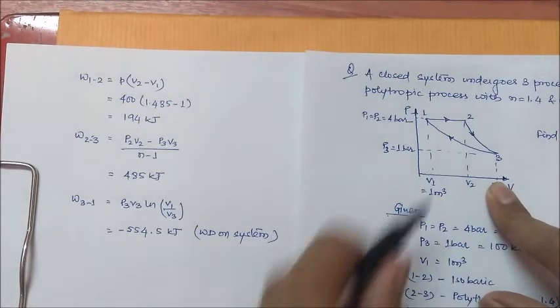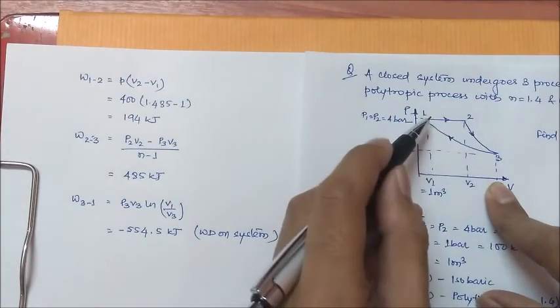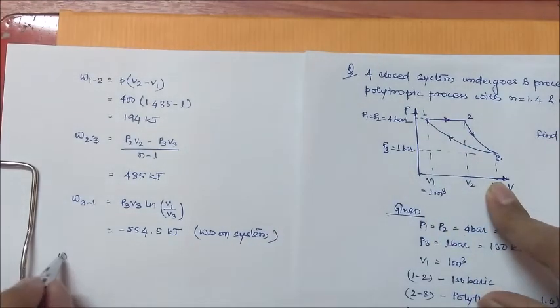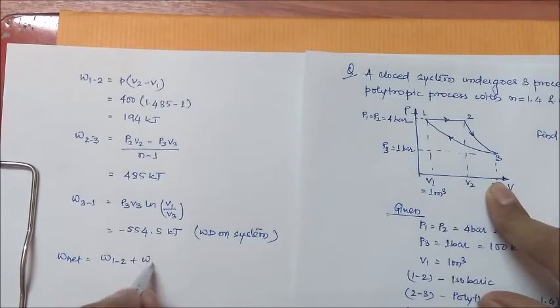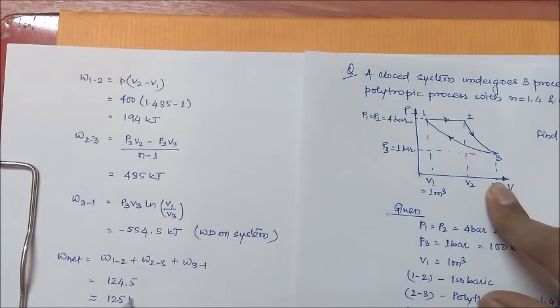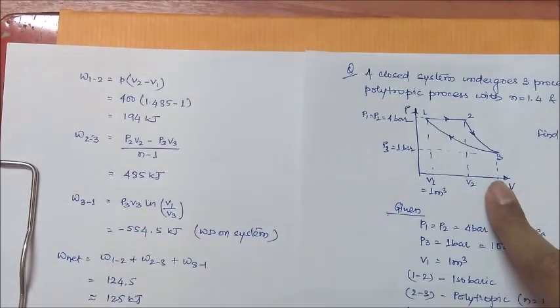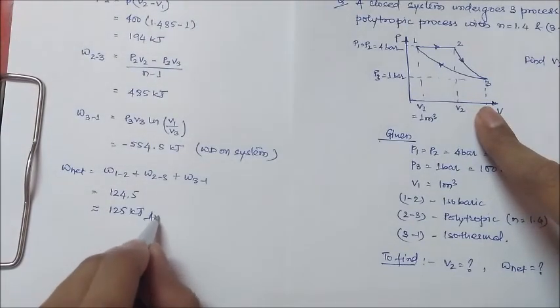As I said, the net work done will be the summation of all the individual work done for each process. The network will be W12 plus W23 plus W31. Summing this up, it will get around 124.5. That is approximately, you can write it as 125 kJ. This is your final answer.